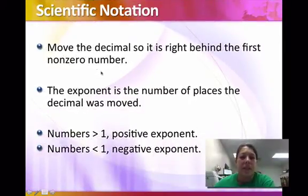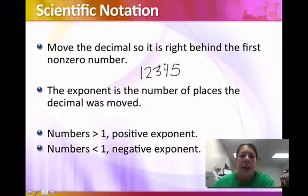So we're going to move the decimal so it is right behind the first non-zero number. That's how you know to do scientific notation. And then the exponent is the number of places that the decimal was moved. So, for example, let's just make up a number. We'll just say 1, 2, 3, 4, 5.